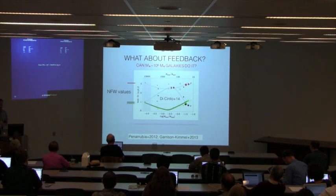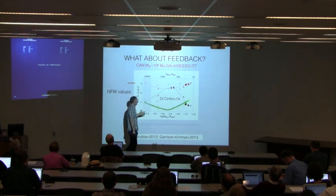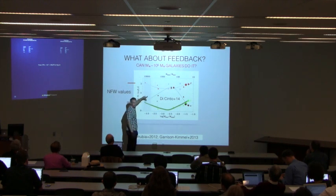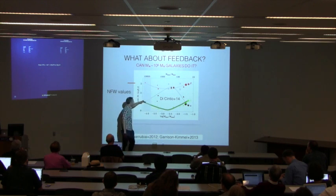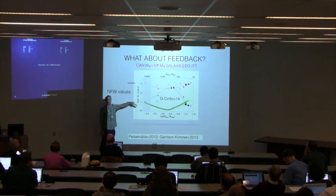Another result from Di Cintio et al. more recently plots the ratio of total stellar mass to halo mass. The galaxies we're concerned about have that ratio at 10^-4. What they find is that at this very low stellar-to-halo mass ratio, things basically go back to the NFW profile.